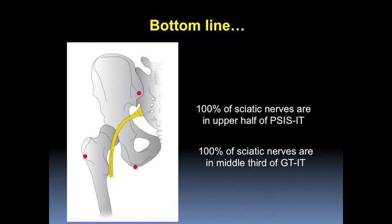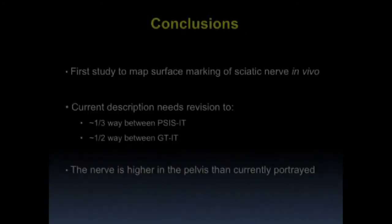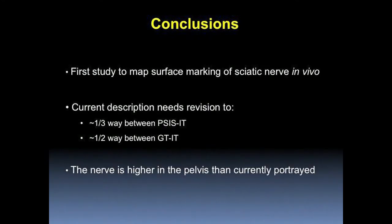In conclusion, all of the sciatic nerves lay in the upper half of the line from the posterior superior iliac spine to the ischial tuberosity, and all sciatic nerves lay in the middle third of the line between the greater trochanter and ischial tuberosity. Our study was the first to map the course of the sciatic nerve in vivo in relation to bony landmarks. The nerve lies one-third of the way from the posterior superior iliac spine and half of the way from the greater trochanter to ischial tuberosity, and the nerve is significantly higher within the posterior region than currently portrayed.